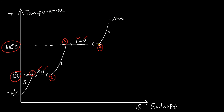Now, if you remove heat from saturated vapor, it will start to condense and form liquid. And if you add heat to saturated vapor, it will start to increase in temperature. So as soon as you add heat to saturated vapor at point 4, the temperature will start to rise — you can increase it as much as you want, and in this region the vapor is called superheated steam.